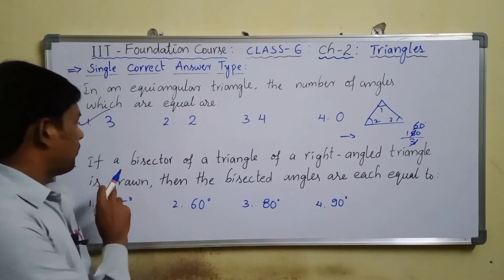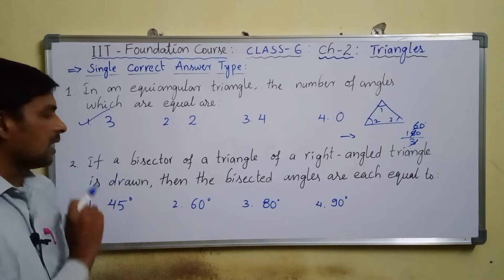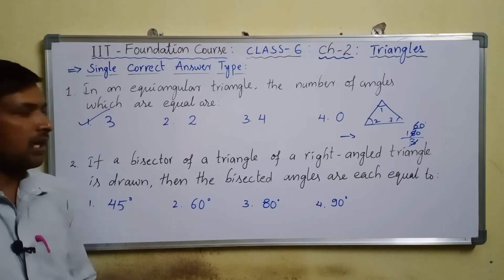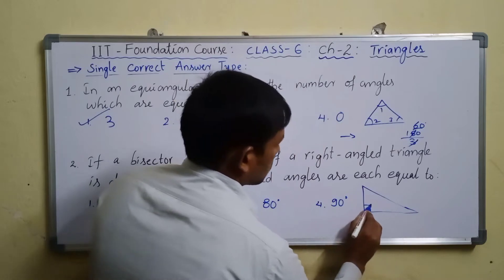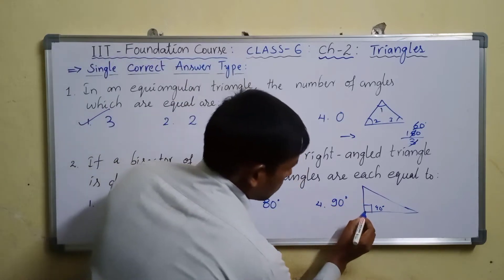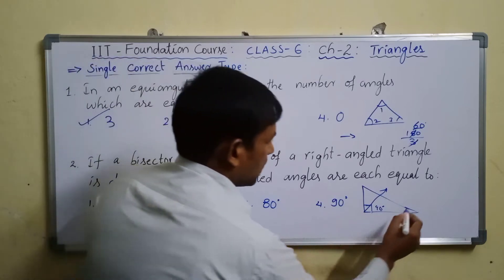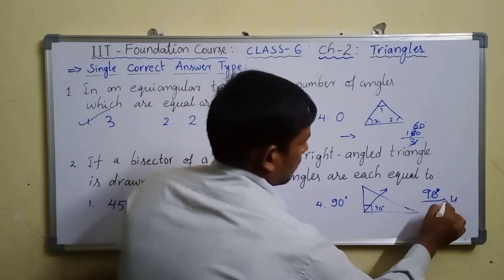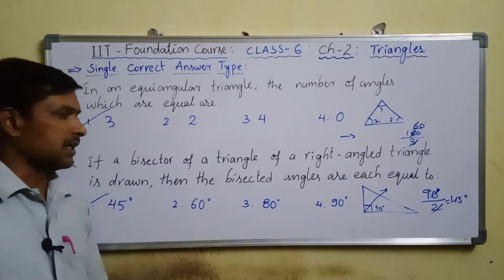Question number two: if a bisector of the right angle of a right angle triangle is drawn, then the bisected angles are each equal to? In a right angle triangle, the right angle is 90 degrees. The bisector divides this angle into two equal parts, so each part is 45 degrees.